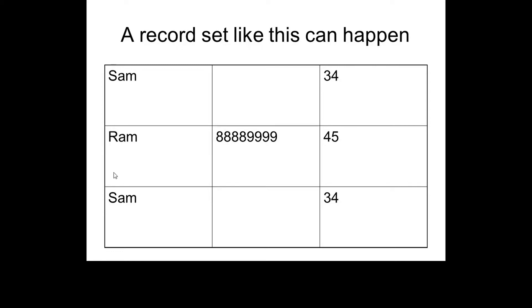We need to identify these students in a way that is unique. So we have to go for a unique ID for every student — like your registration number. It is mandatory if you are a student in our university management system to have a registration number. So registration number is not going to be null and it's going to be unique to every student. That kind of constraint — mandatory and unique — is called the primary key constraint.